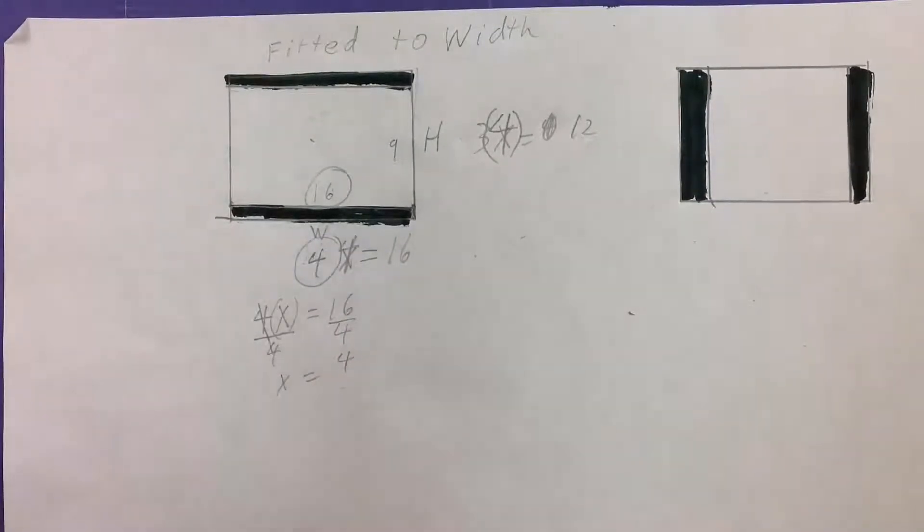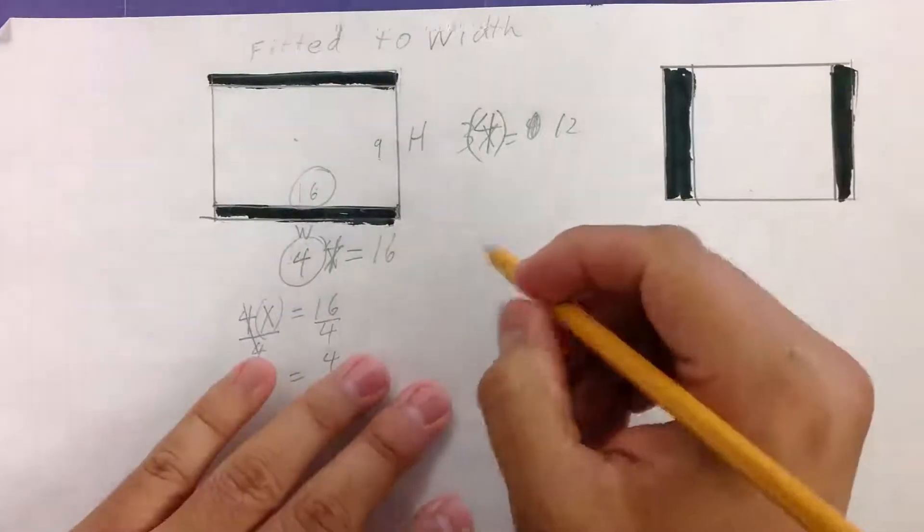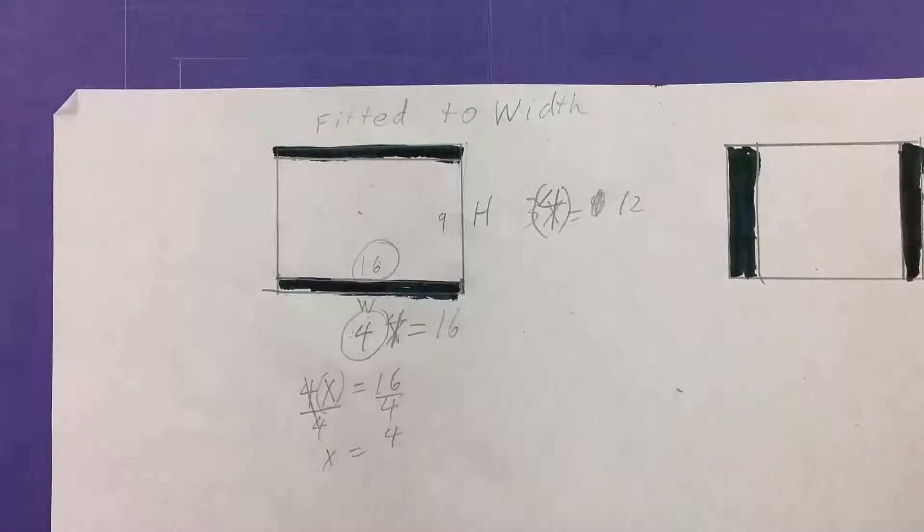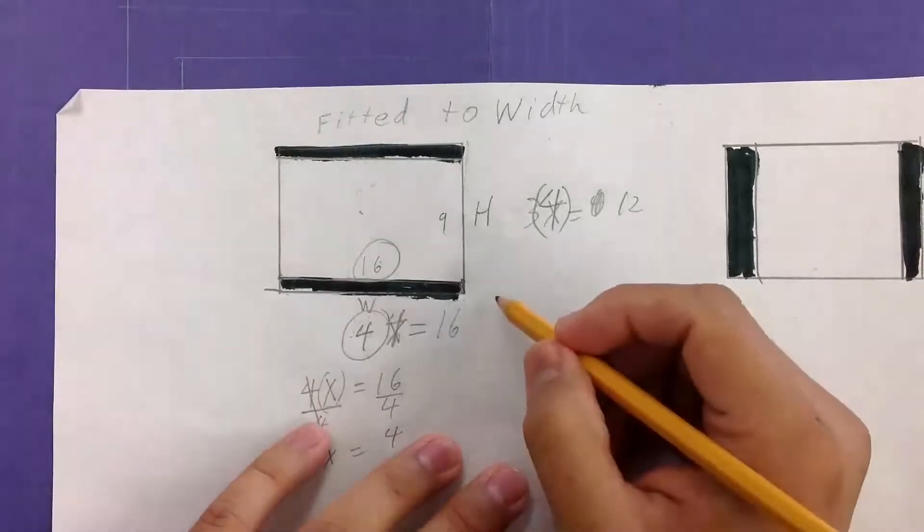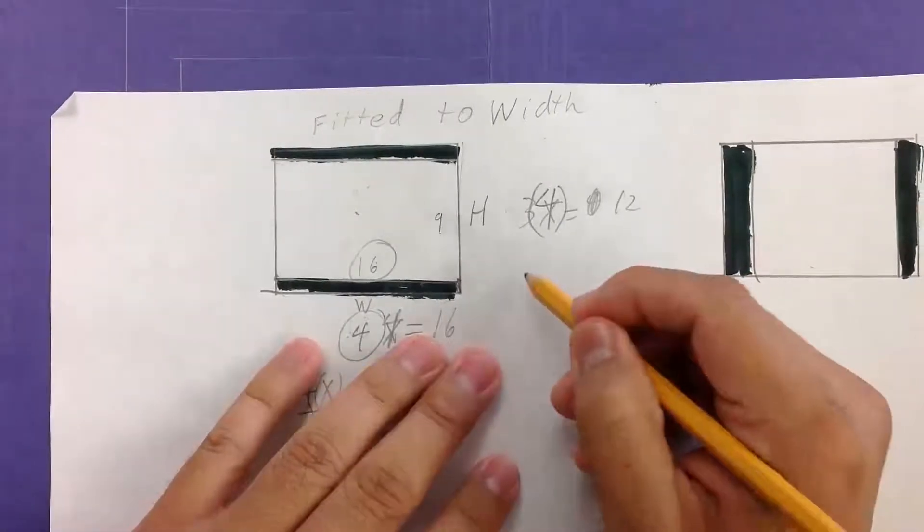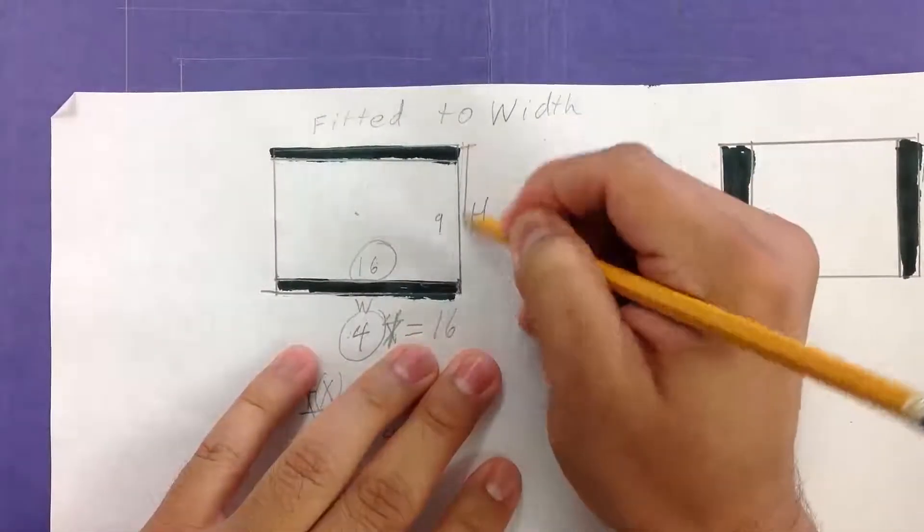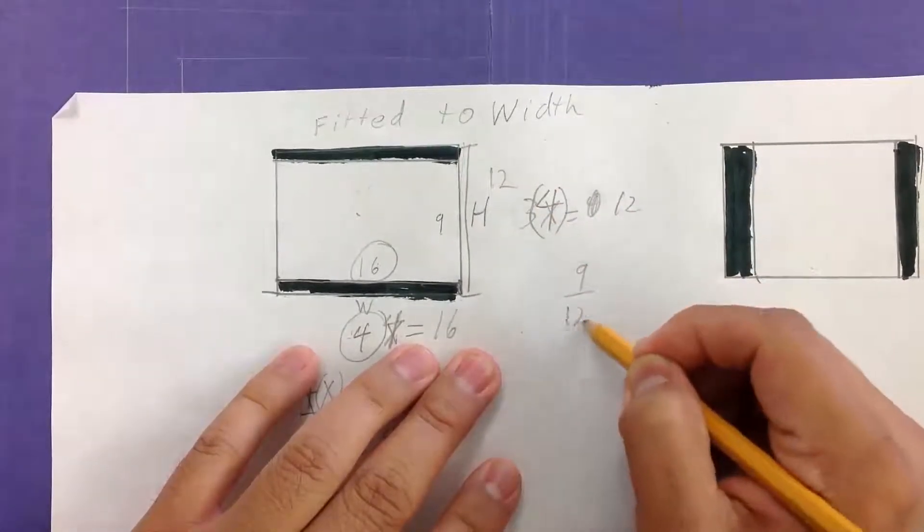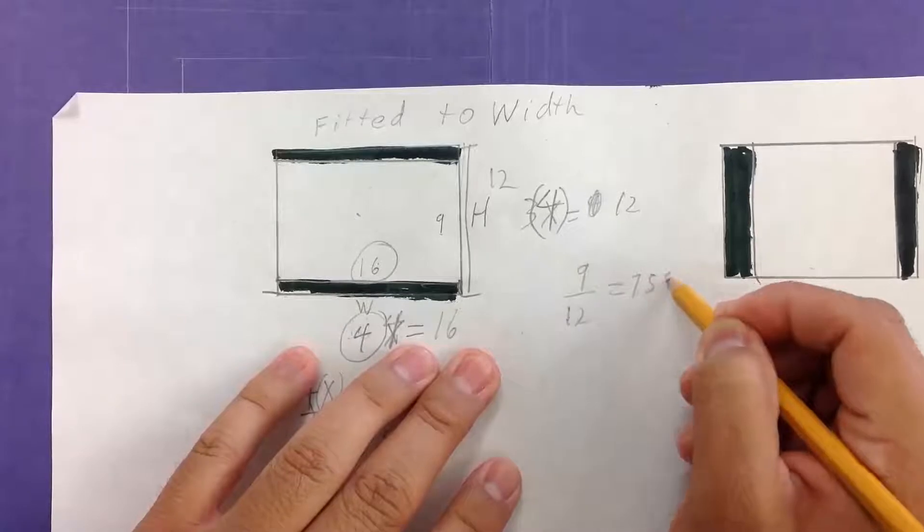Now, usually when you're finding out percentages of how much is used, we usually take part over whole, and we usually use area. It's not totally necessary in this case, but I'll do it for you just so you can see my mathematical thinking. Originally, I would just take the total height, which happens to be 12. 9 divided by 12, and this would give me approximately 75%.